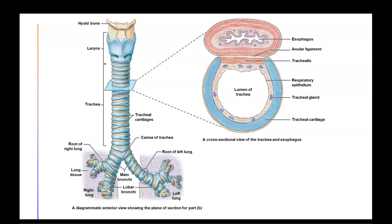The trachea branches into the right or left bronchi. The point where it splits is referred to as the carina of the trachea. Looking at a larger view, the esophagus runs along the posterior section of the trachea — against the section without C-shaped cartilage. The C-shaped cartilage keeps the airway open, and the open tunnel inside is referred to as the lumen of the trachea.